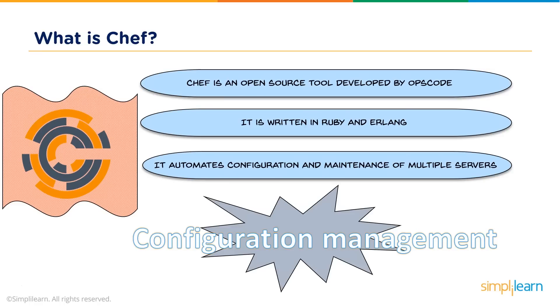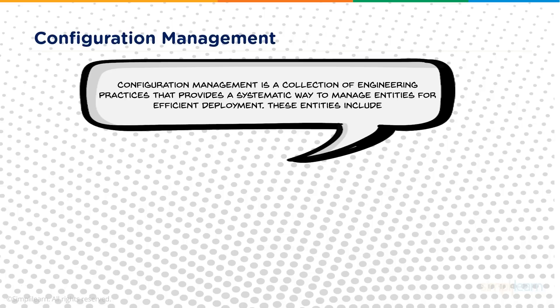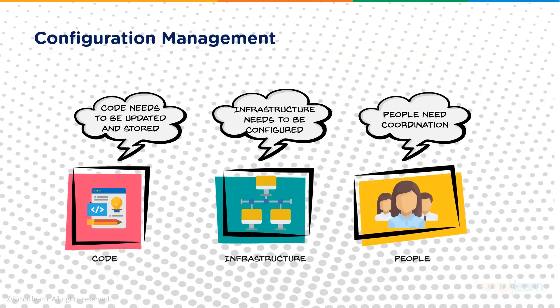Configuration management is a collection of engineering practices that provides a systematic way to manage entities for efficient deployment. These practices are for managing your entities required for efficient deployment. Those entities are: code — the code system administrators write for configuring systems; infrastructure — the collection of systems and servers; and people — the teams that take care of this infrastructure.